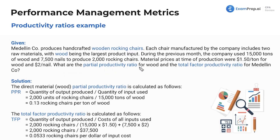What is the partial productivity ratio for wood? Just like the truck example — it could be for just rubber, just metal. And then what's the total factor productivity ratio for all the costs? Each chair manufactured includes two raw materials, with wood being the largest input. During the previous month, the company used 15,000 tons of wood and 7,500 nails to produce 2,000 rocking chairs.